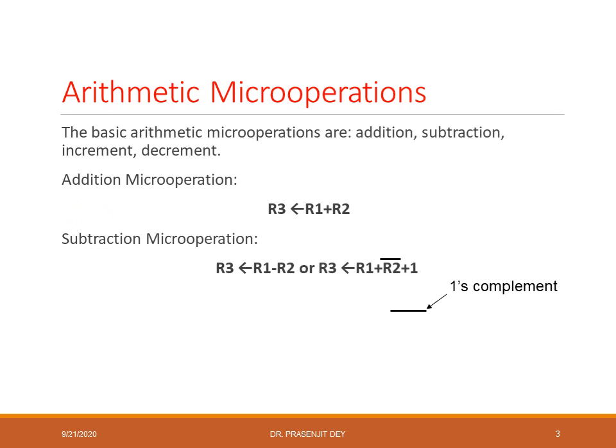The basic arithmetic operations are addition, subtraction, increment, and decrement. In register transfer language, for addition, we add R1 and R2 and copy the result into R3. For subtraction, we use 2's complement: the 2's complement of R2 is R2 complement plus 1. Adding that with R1 gives the subtraction result, which we then copy into R3.